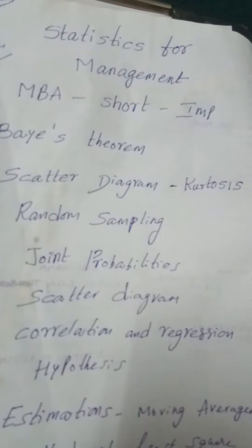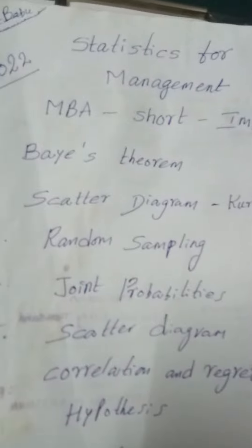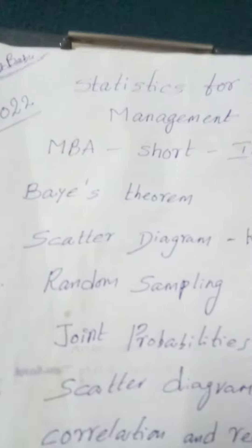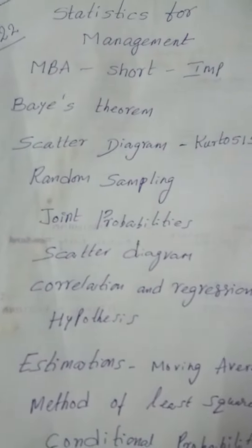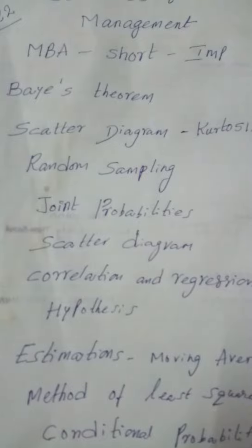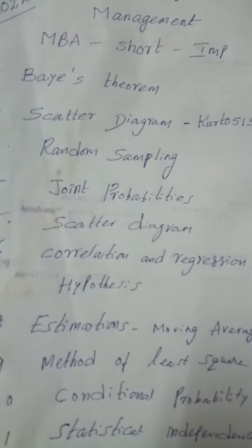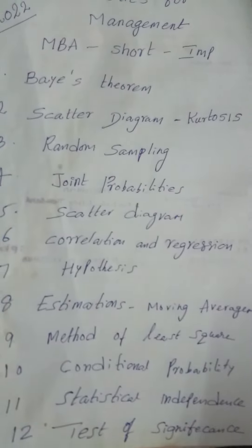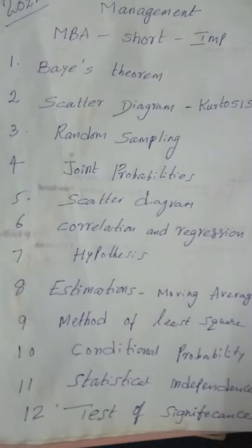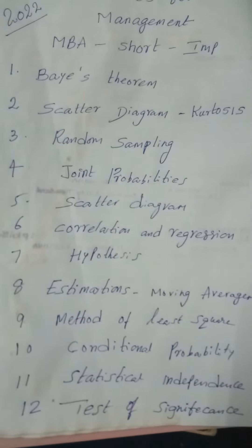For theory purpose, this is important — random sampling is a question from sampling theory and probability. Conditional probabilities and joint probabilities — these are very important.